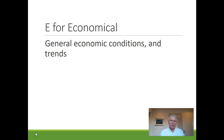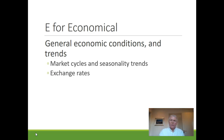The E in PESTLE is for economic factors. Consider general economic conditions and trends like market cycles and seasonality. Exchange rates are an important consideration for multinational companies, for instance hotel chains like Marriott or fast food chains like McDonald's. Tax and interest rates matter to most businesses. Imagine you have a premium restaurant — when a recession hits, people will tend to spend less money on restaurant visits, but when the market goes up people will be willing to spend more. Economic ups and downs each create their own sets of problems and possibilities, and your ability to anticipate those cycles can be very important.